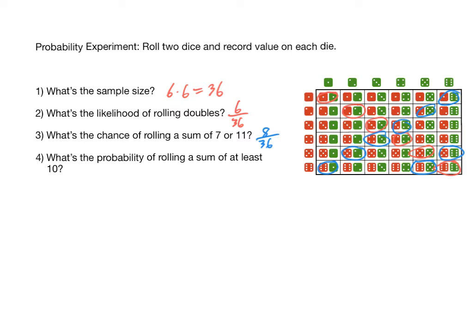Then finally, what's the probability of rolling a sum of at least 10? So at least 10 is 10 or more. So where are the 10s? Well, you could get 4 and 6, 5 and 5, 4 and 6. Or the 11s, you could get 6 and 5 and 5 and 6. Or 12, you could get 6 and 6 for a total of 6 possibilities out of 36. So by having this sample space here right in front of us, we can fairly easily get these probabilities. But I want to go back to this question of here. What's the sample size? How can we get that 36 without having to draw this entire thing here? That's what we'll do in the next slide.